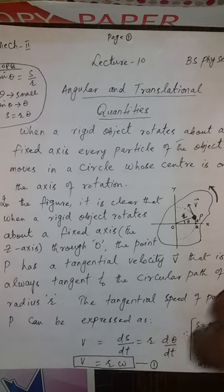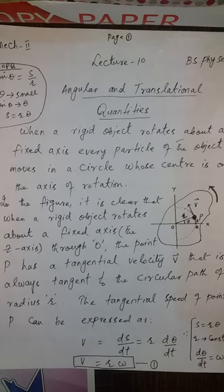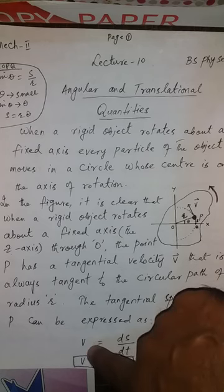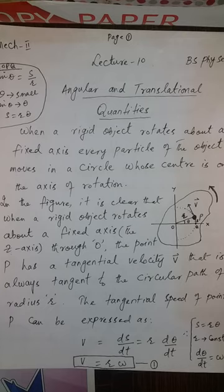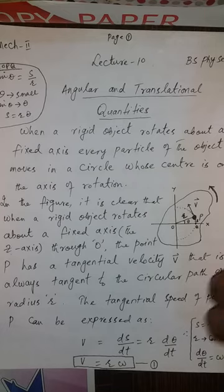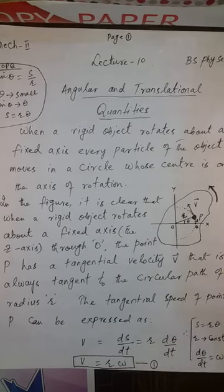The term dθ/dt is, as per our previous lectures, equal to angular speed omega. So tangential speed equals the length of the radius vector multiplied by the angular speed: v = rω. This equation is marked as equation number one, and it is our first established relationship between translational and angular quantities, since tangential speed refers to a translational quantity.